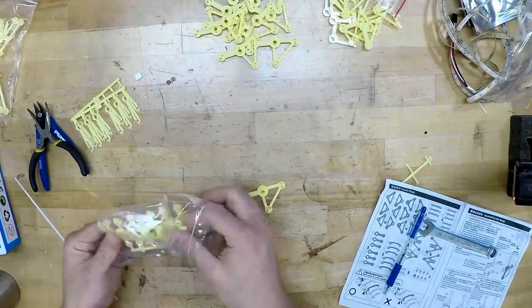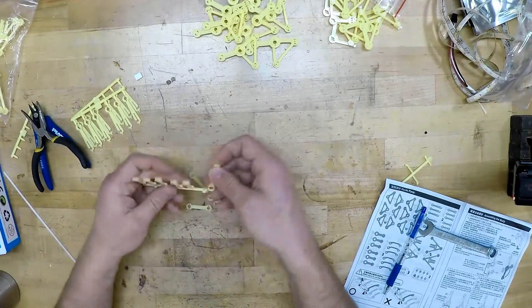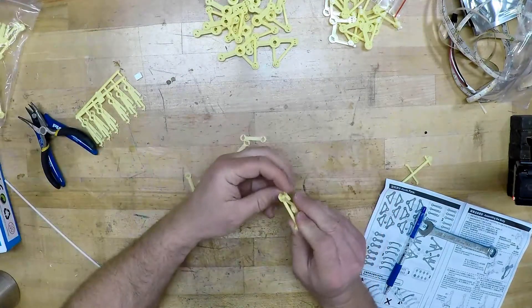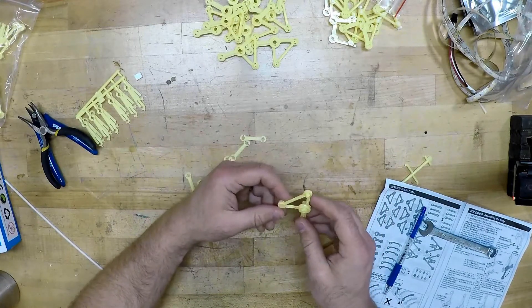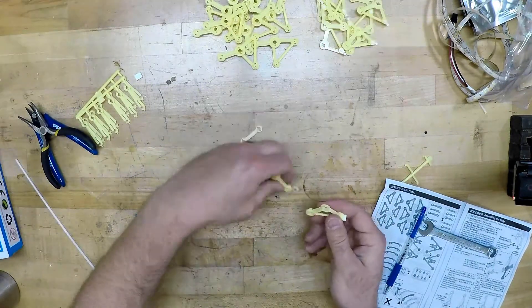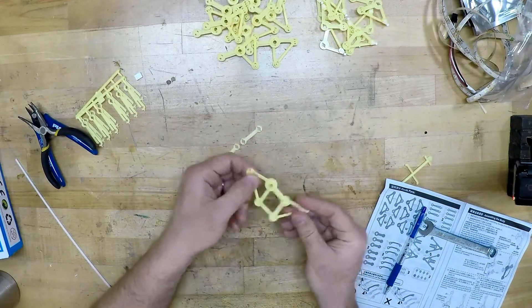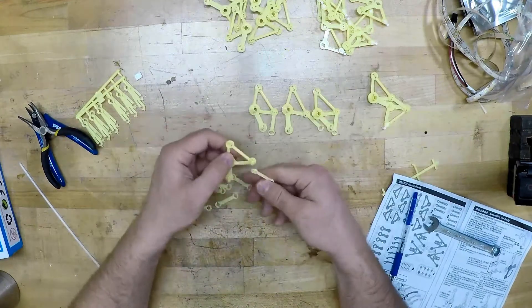And then it was time for the second linkage. So you put that on there along with the bottom triangle and you have the characteristic parallelogram of the Jansen Link system.